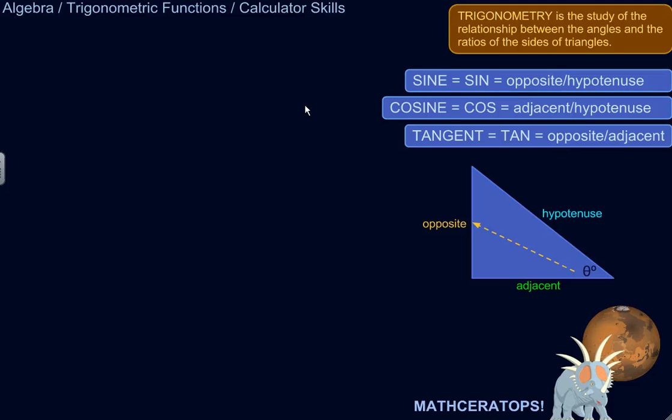All right, so trigonometry is the branch of math which involves studying the relationship between the angles in a triangle and the ratios of its sides.